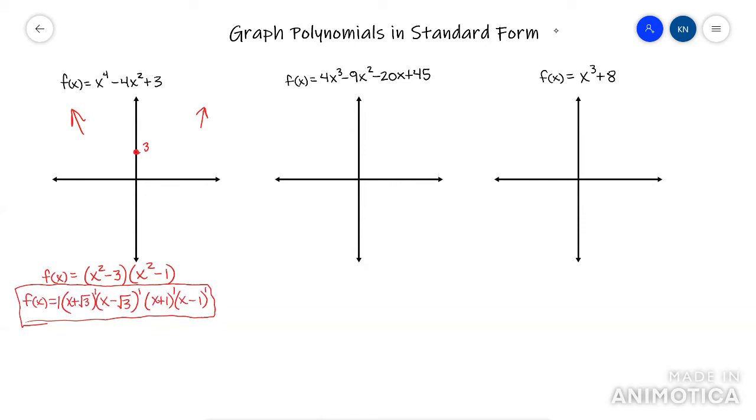Mark your x-intercepts. So these two are easy to see. This one and this one, it's just going to be at negative one and positive one. And then the other two, they're going to be at positive and negative root three. And all of these x-intercepts are going to be straight cut throughs because all these exponents are one.